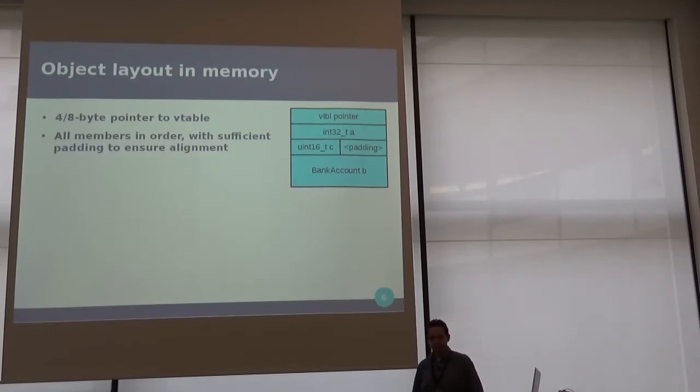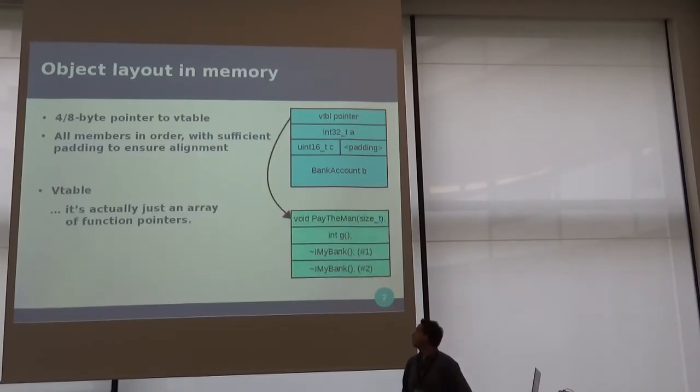So how does an object actually look? So if you look under the hood, I have an object, it has a 8 byte pointer to the Vtable, that's all the way at the top. I have a bunch of members, they're in order, and they are just laid out like that with padding in between. So the Vtable points to the actual Vtable, which is really boring because it's just an array of functions.